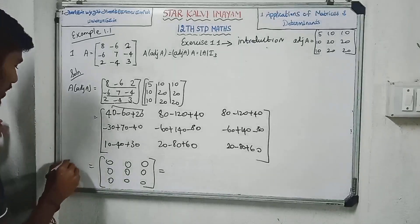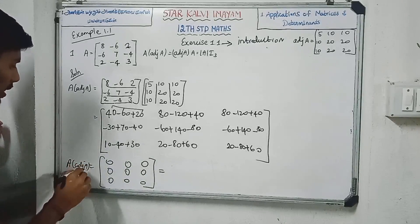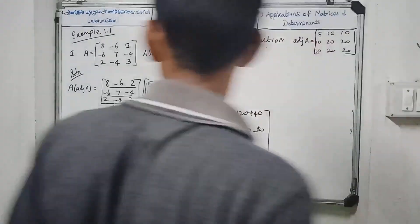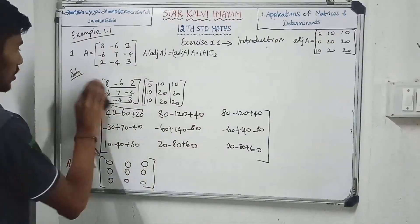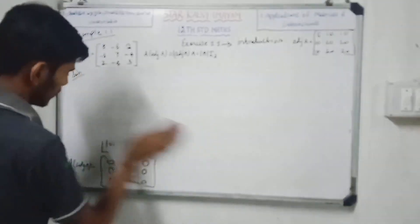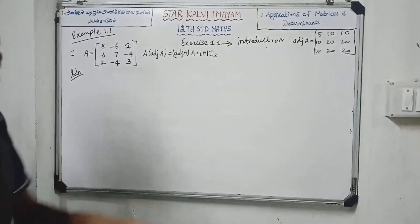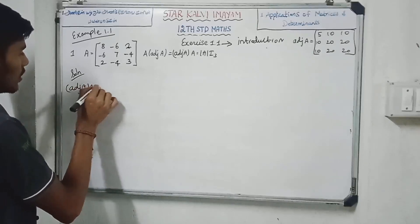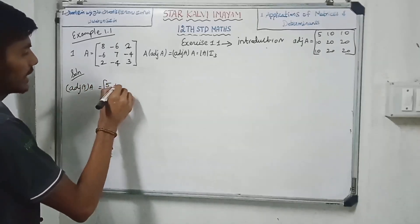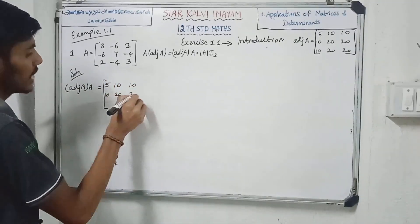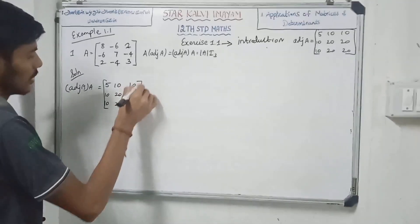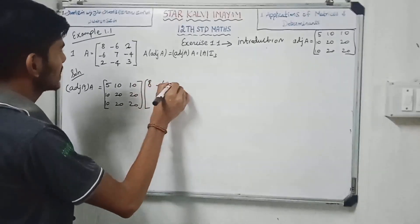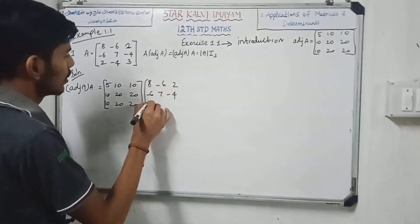Now we have Adjoint A, value of 0. Next we have Adjoint A. The value equal to — to prove: Adjoint A into A. Adjoint A values are: 5, 10, 10, 10, 20, 20, 10, 20, 20. Adjoint A value: 8, minus 6, 2, minus 6, 7, minus 4, 2, minus 4, 3.